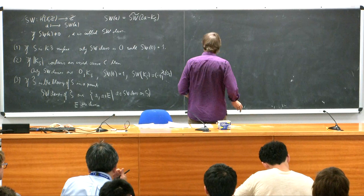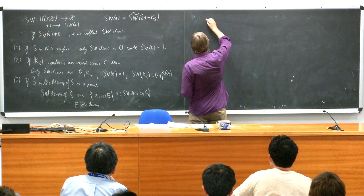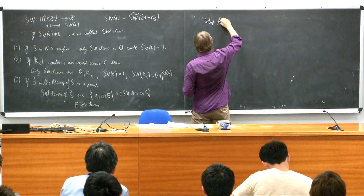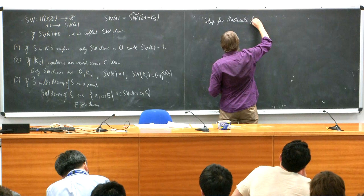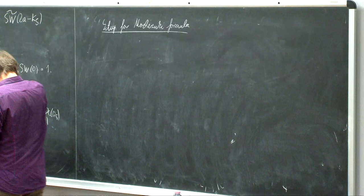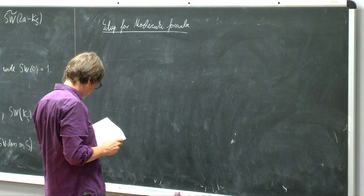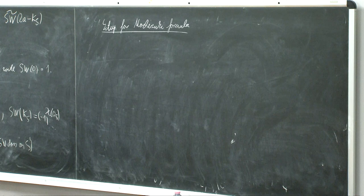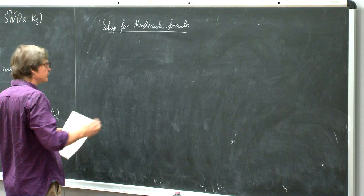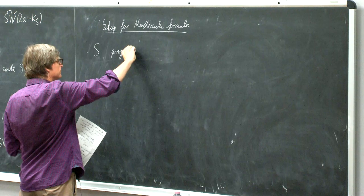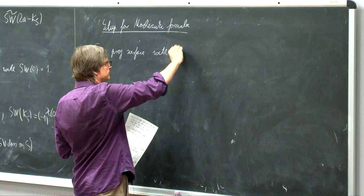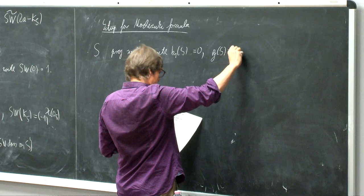There are other examples, for instance a simple description for elliptic surfaces, but maybe I will not write it. One can see that these are quite simply described — in particular, if I assume that K_S contains an irreducible curve, then I know explicitly what the Seiberg-Witten invariants are, and this is the reason why I restrict my attention in this presentation to that case.